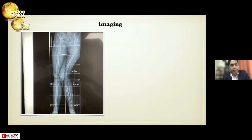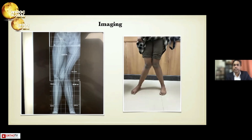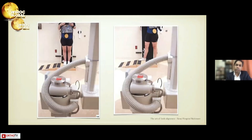Moving to imaging — whenever a patient comes with genu valgus deformity, we order a full-length X-ray extending from the ASIS to the ankle joint: AP standing view and lateral view. We need to position the patient properly so that we get a good X-ray. Sometimes bilateral deformity may not give the right impression if positioning is incorrect, so proper imaging is critical.